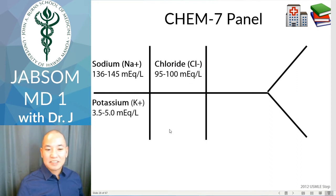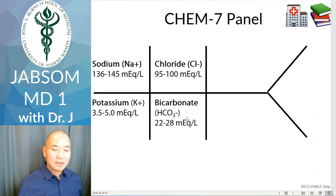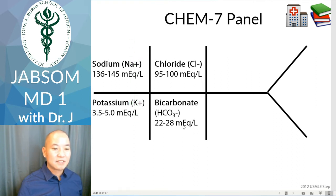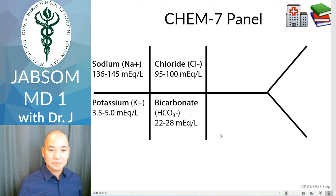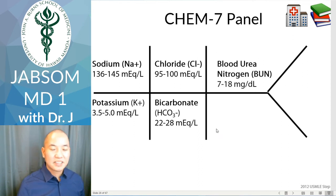Now for potassium: potassium goes below sodium, and bicarbonate goes below chloride. So all the cations — potassium and sodium — are in the same column. And the anions — the negatively charged ions — have bicarbonate right below the negatively charged chloride. Then we have BUN (blood urea nitrogen) and creatinine.